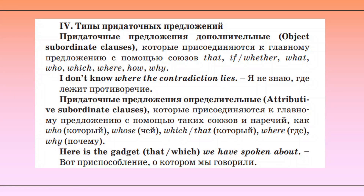Придаточные дополнительные (object subordinate clauses) присоединяются к главному предложению с помощью союзов: that, if, whether, what, who, which, where, how, why. Например: I don't know where the contradiction lies — я не знаю, где лежит противоречие.